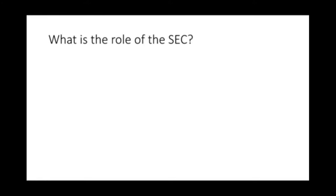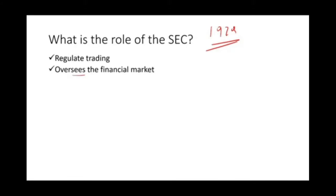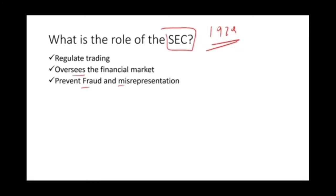It's important to understand the big picture: why the SEC exists and when it was created. The SEC was created as a result of the 1929 stock market crash. The government wanted to restore confidence in the stock market, so they created this federal agency to regulate trading. The SEC role is to make sure investors are informed and to prevent fraud and misrepresentation to the public.